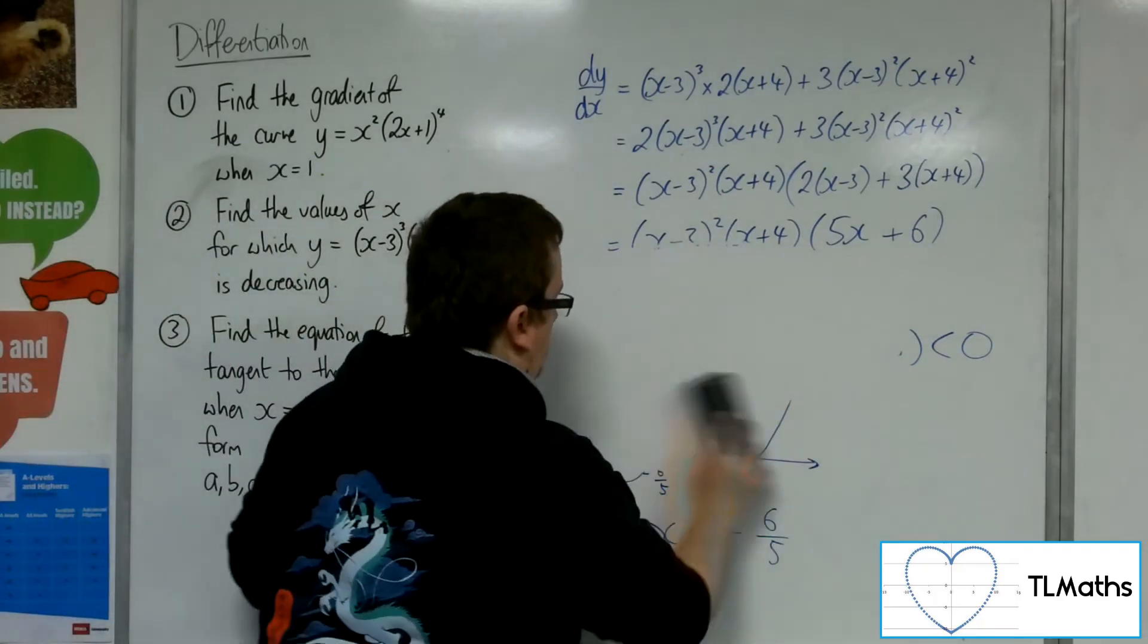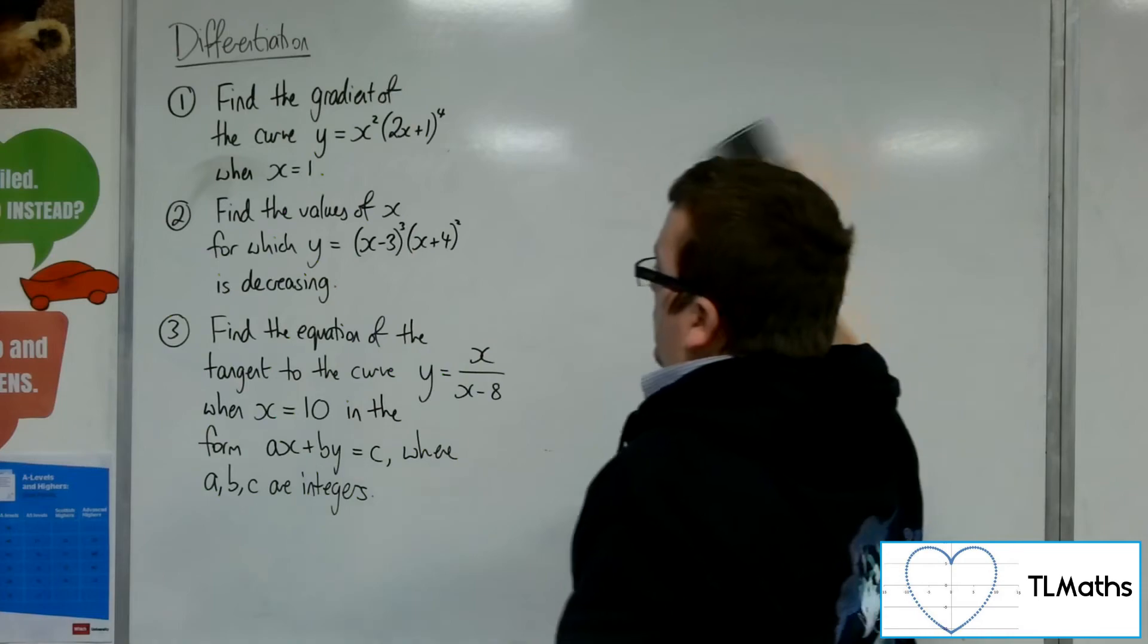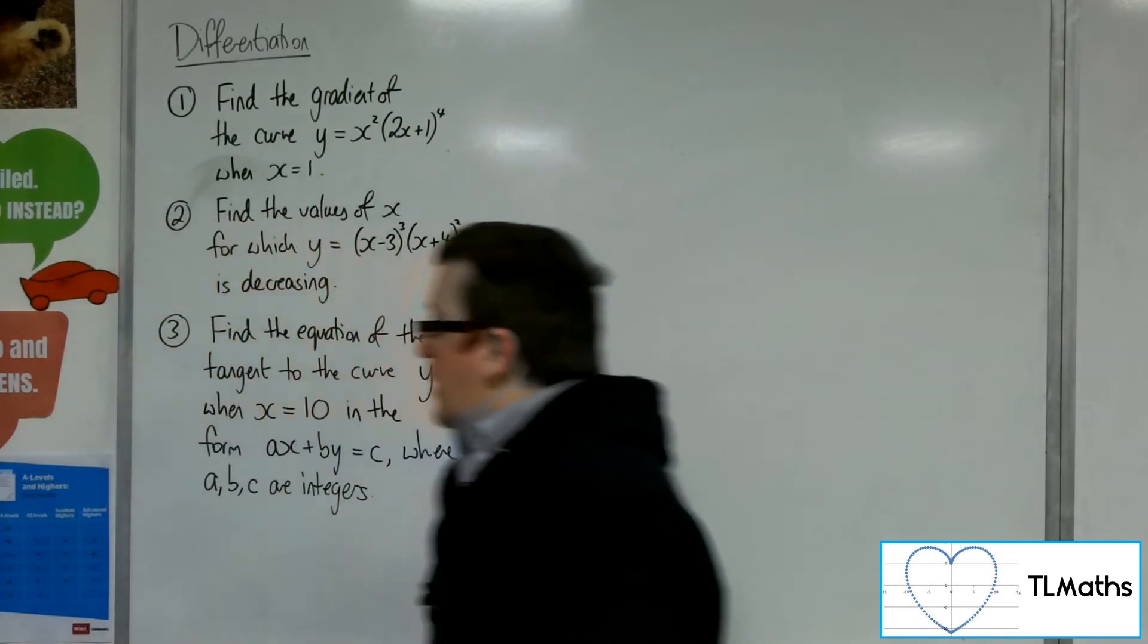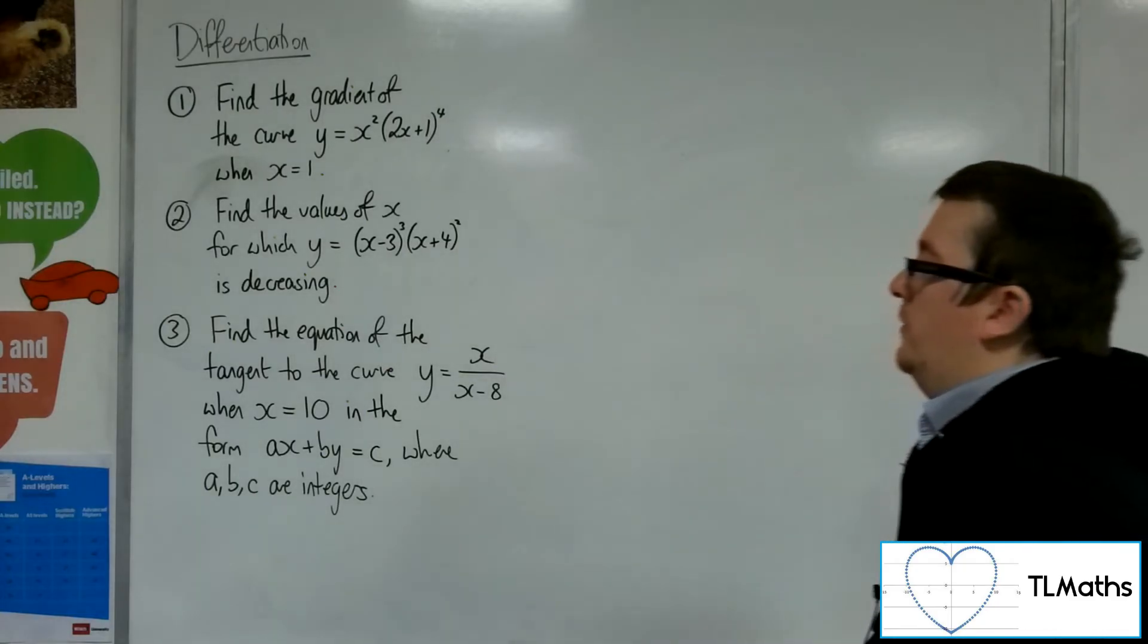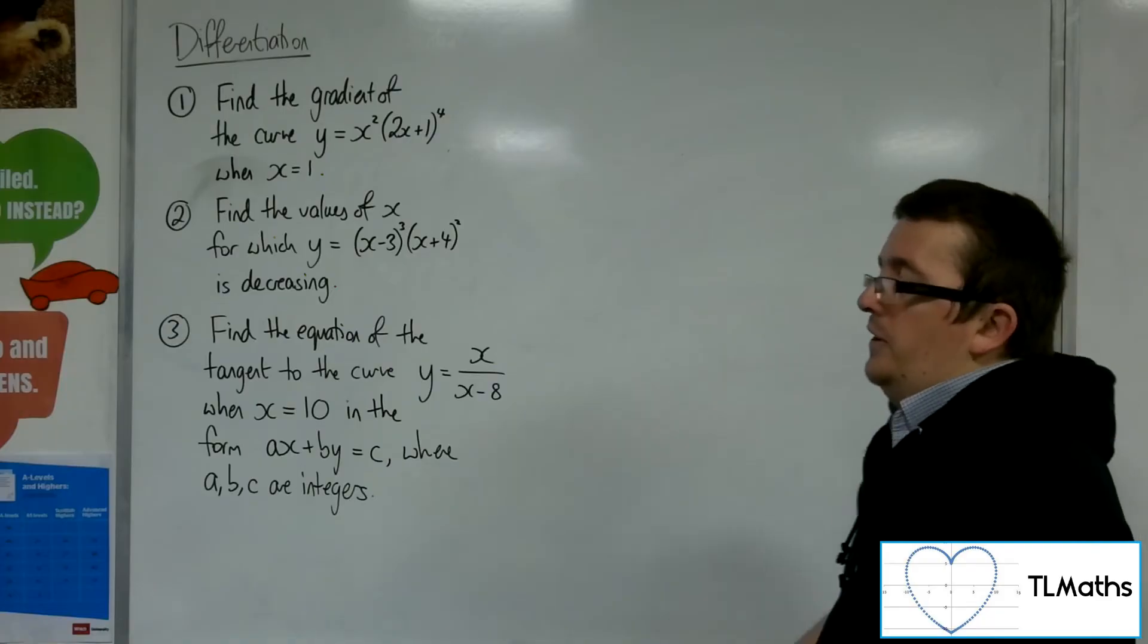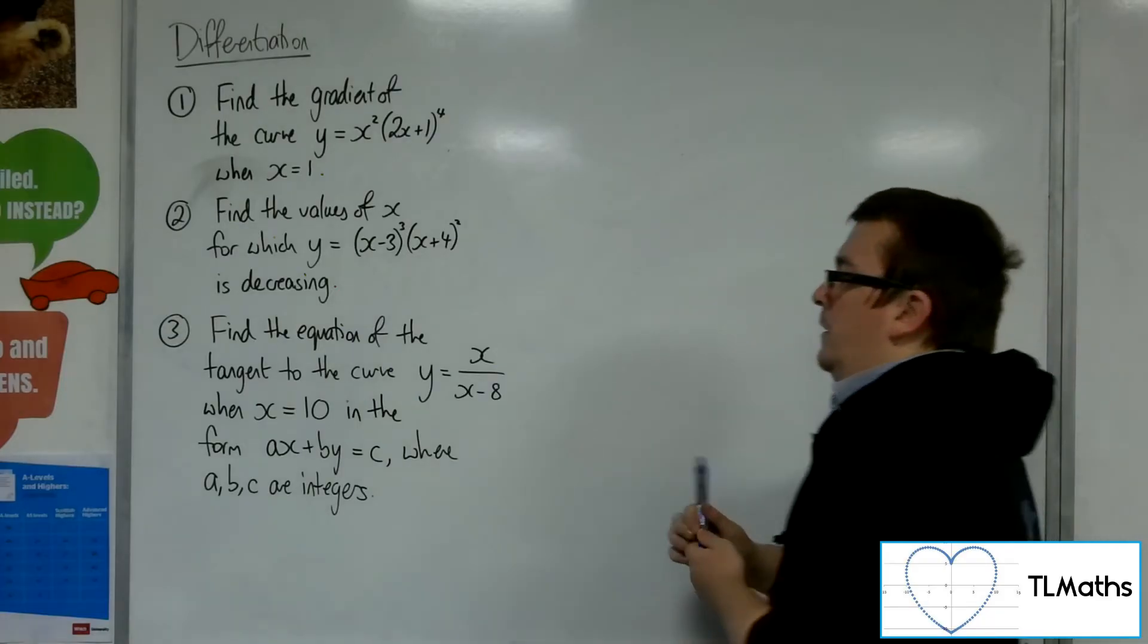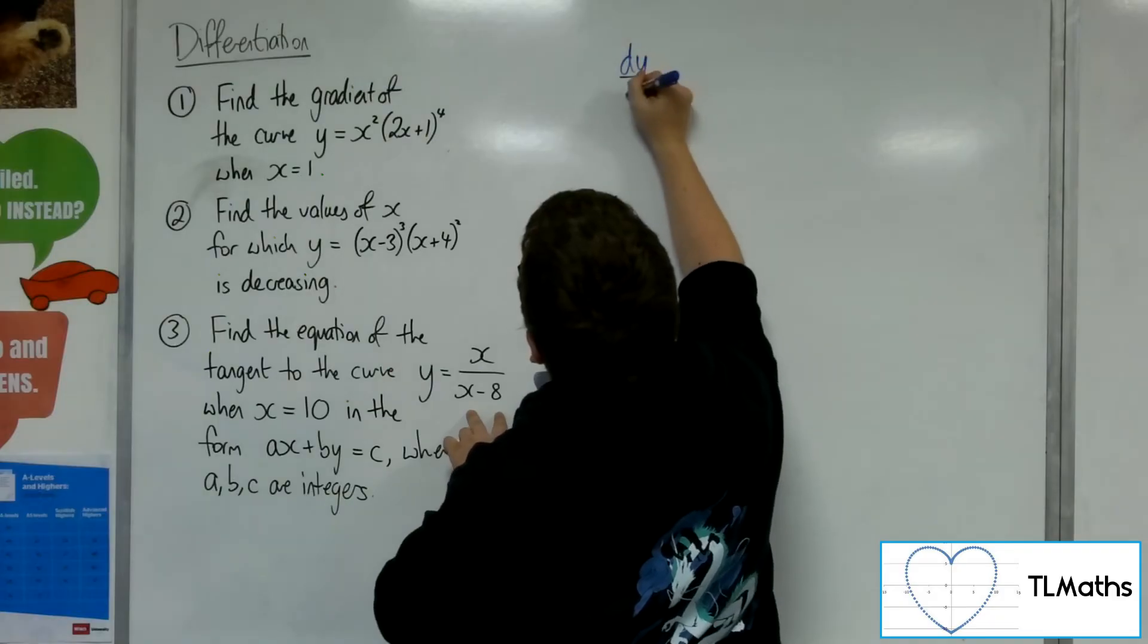Let's keep going. Let's have a go at number 3. Find the equation of the tangent to the curve, y equals x over x minus 8, when x equals 10, in the form of ax plus by equals c, where a, b, c are integers. So I want to differentiate that. So I'm going to use the quotient rule.